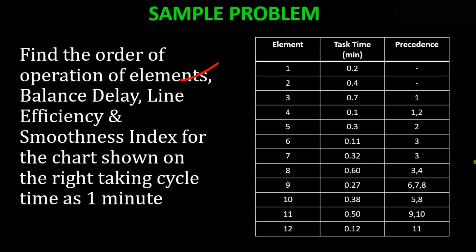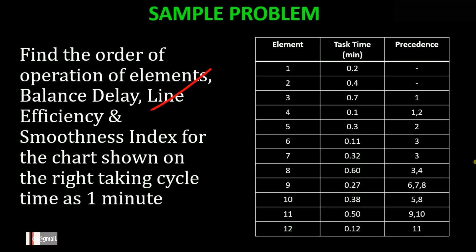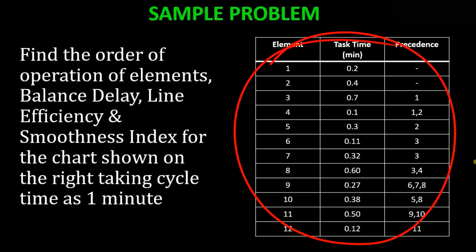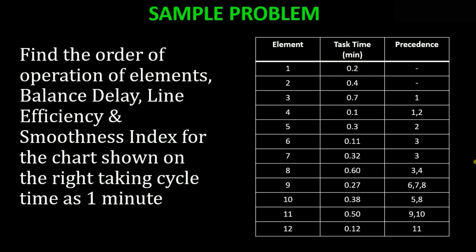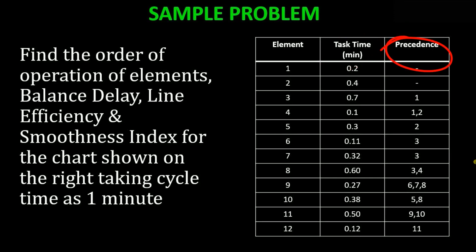The question says: find the order of operation of elements, balance delay, line efficiency, and smoothness index for the chart shown on the right, taking cycle time as one minute. This is the chart given to you, and in this chart you can see that there are three columns.